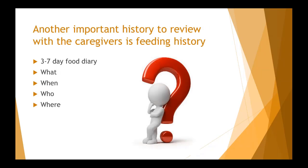An important component is a diet history or feeding history from the family, usually gathered via a three- to seven-day food diary detailing what the child is eating and drinking. We look at types and textures of food, viscosity, quantity, quality, and feeding route.